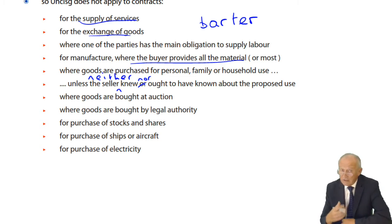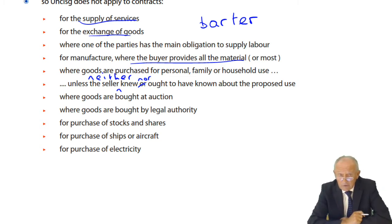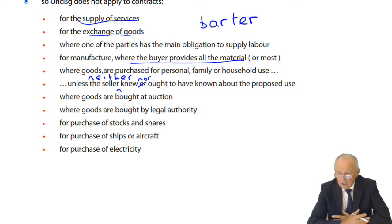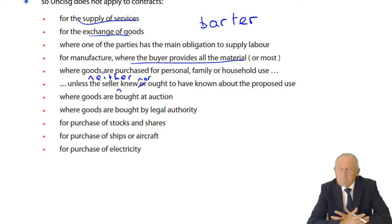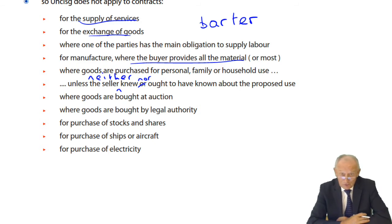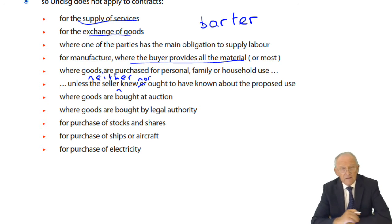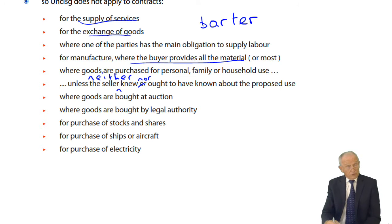Note: the lecture notes contained an error on this point — the correct wording is 'unless the seller neither knew nor ought to have known' about the personal use. This is a radical alteration that changes the meaning 180 degrees from what was originally printed. If you have the old version, you need to insert those words.